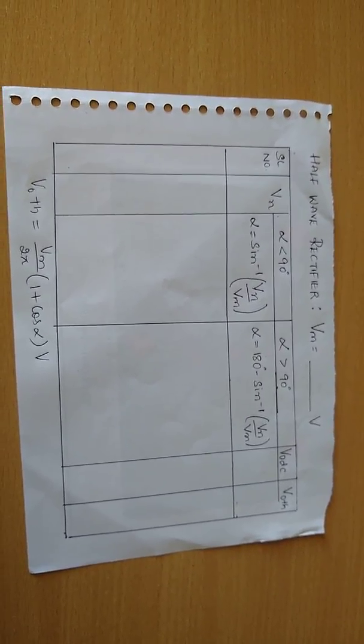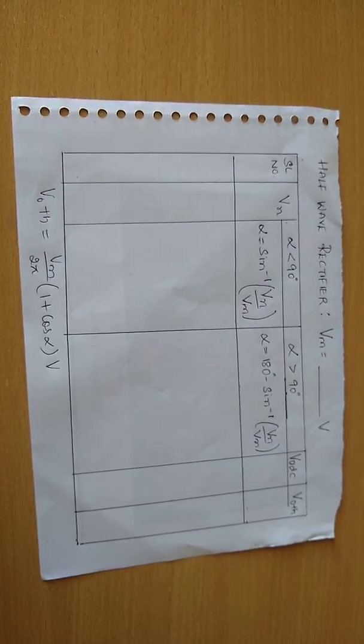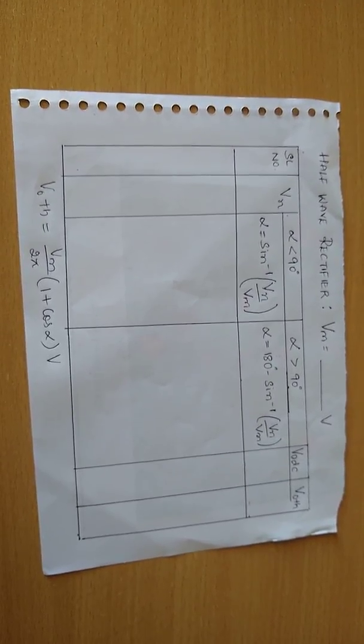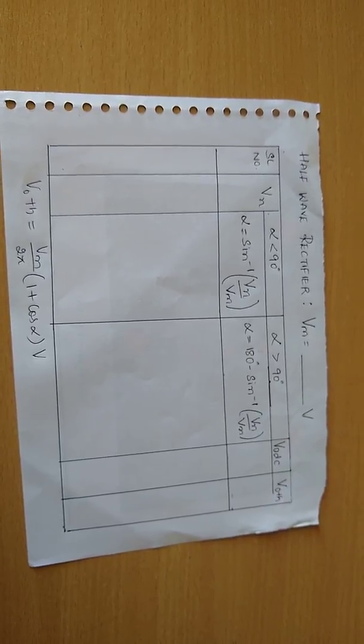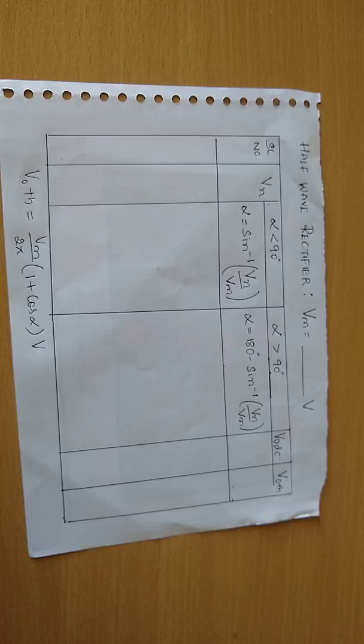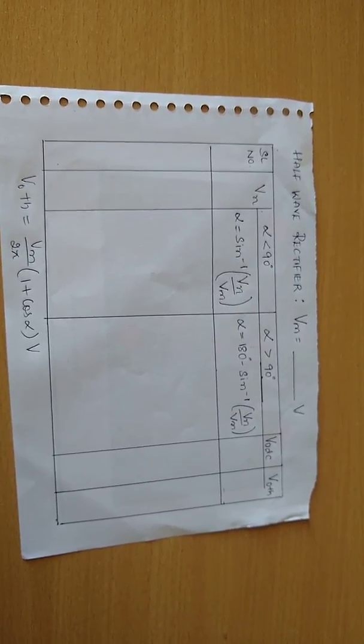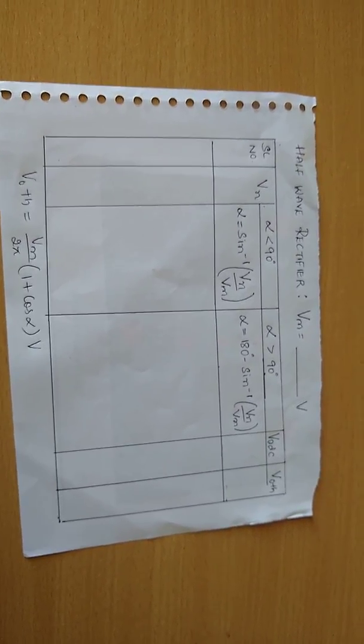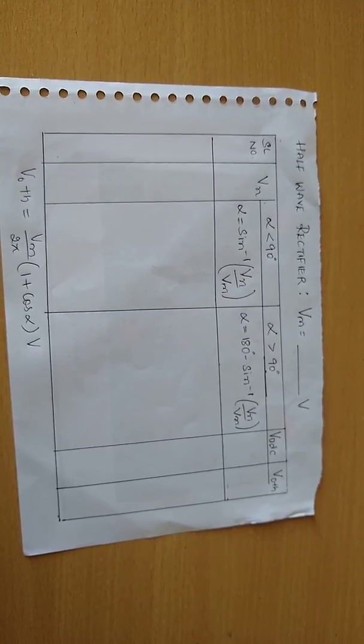The conduction angle beta is calculated using the formula beta equals 180 minus alpha. The current and the power is calculated by I0 DC equals V0 DC by R amperes, and output power DC equals V0 square DC by R watts respectively.